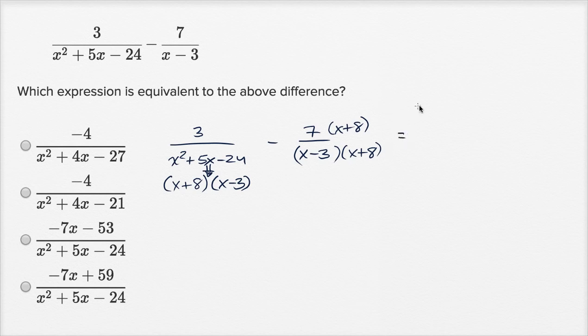This is going to be equal to three over x plus eight times x minus three, and then minus—and actually let me distribute the seven—minus, remember we have this negative sign out front, so it's gonna be minus seven x plus 56